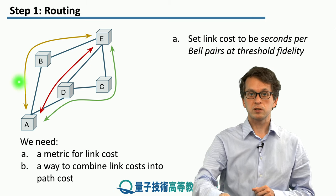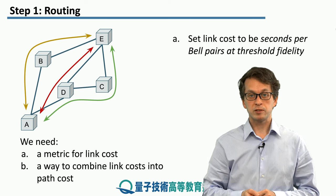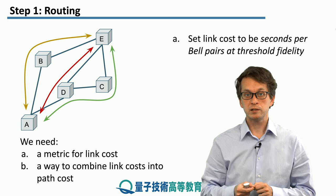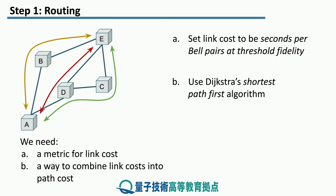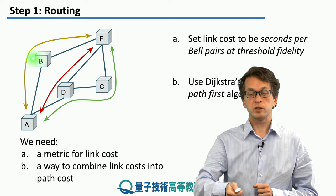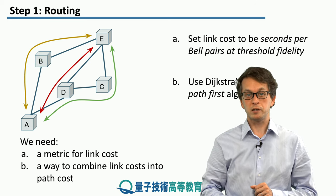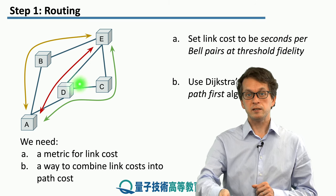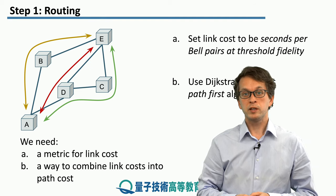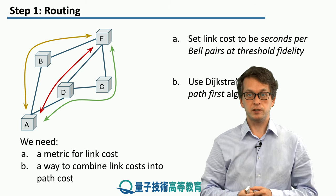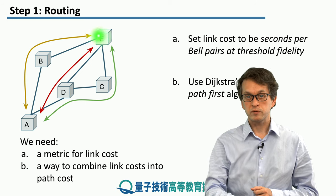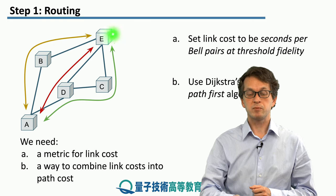Now, how do we combine the costs for each individual link to know the full cost of establishing end-to-end entanglement over a longer path? One possibility is to use Dijkstra's shortest path first algorithm. We can sum the costs for path A-B-E to get a good estimate of the total cost, or do the same for A-D-E and A-D-C-E. This way the network can identify the most efficient path and route information to establish end-to-end entanglement more efficiently.